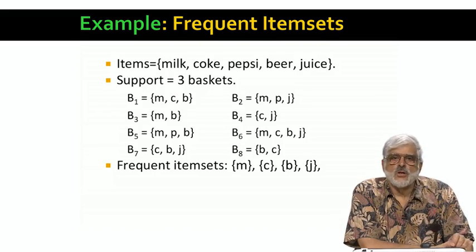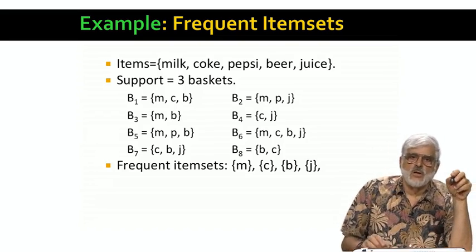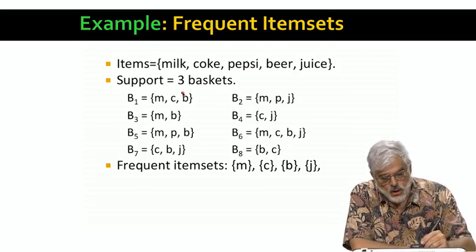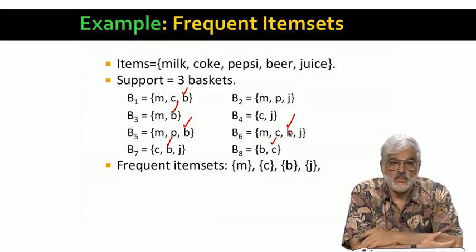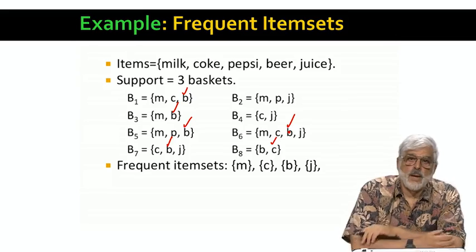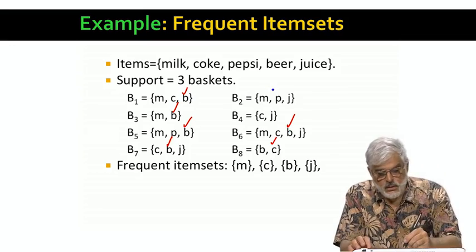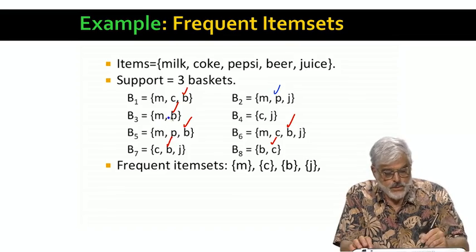Almost all the singletons are frequent. Each of the items, except Pepsi, appears in at least three baskets. For example, beer appears in B1, B3, B5, B7, B6, and B8. Pepsi itself is not frequent because it appears only in B2 and B5.